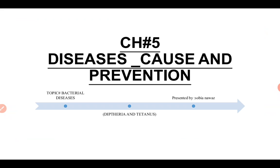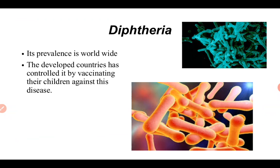So far we have studied about the bacterial diseases, that they are caused by the attack of specific bacteria on the human and they are responsible for certain types of diseases, like tuberculosis and whooping cough. Today we will read the new topic that is diphtheria and tetanus, and we will study how these diseases are caused in the human.